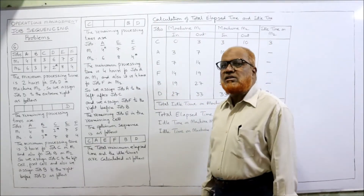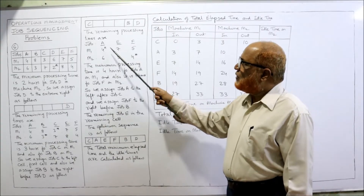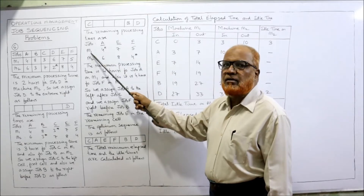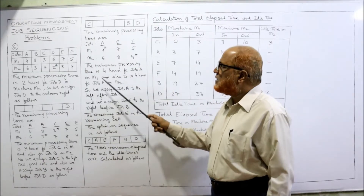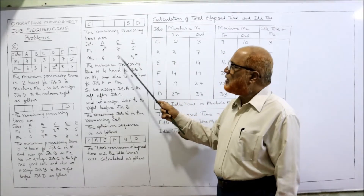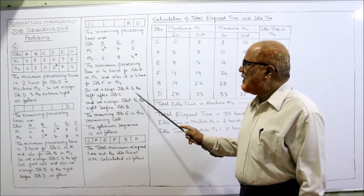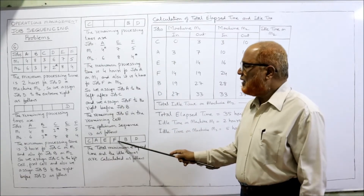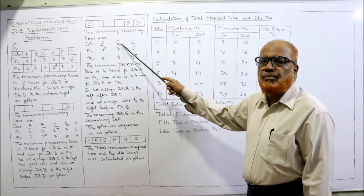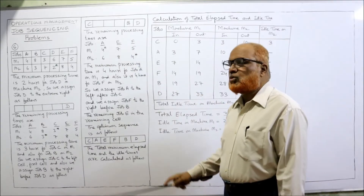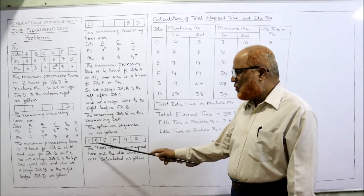The remaining jobs are A, E, F. Again we locate the minimum time among these — we find 4 hours, and again there is a tie. For job A, 4 hours is on machine M1, so we assign A to the left after C. For job F, 4 hours is on machine M2, so F goes on the right side before B. The sequence so far is C, A, _, F, B, D. Only one cell is left and one job — E — so E fills the unoccupied cell.